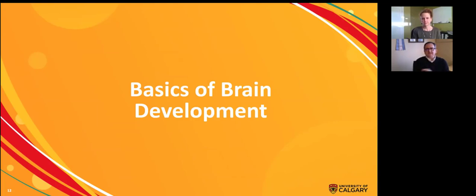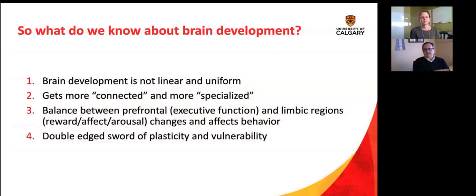So I'm going to dive in and I'm going to kind of set you up for some of the really important stuff Gabby's going to cover. I'm going to set you up by talking a bit more about the physiology aspects of brain development. And really with brain development, there's kind of four main principles that you want to keep in mind. The brain development is not linear and uniform. It's not like a straight line. The brain gets more connected and specialized as you get older. And there's a balance between key parts of the brain that really affect how you behave. And there's also a double-edged sword in brain development for kind of learning, but also vulnerability. And we'll dive into each of these things really quick.